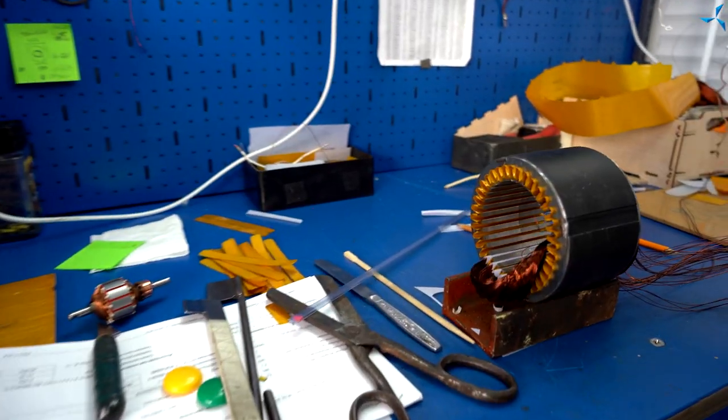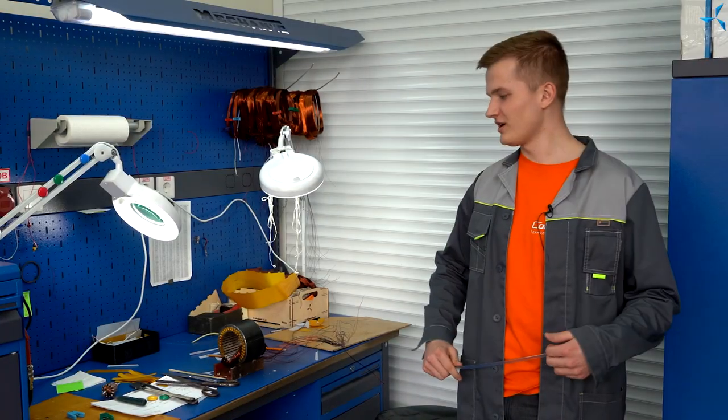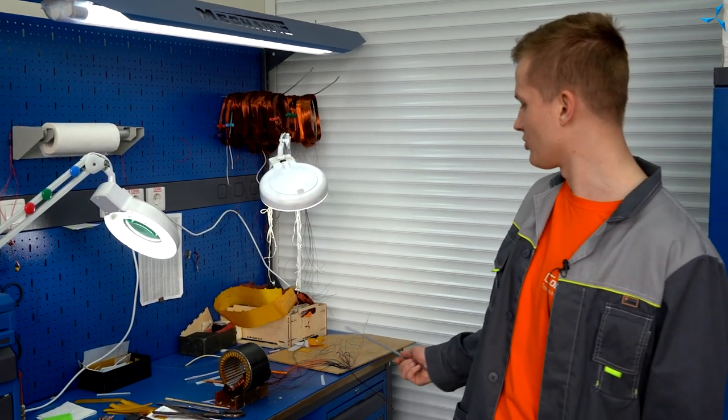Let's move on to the next workstation. At the moment, the stator coils for small-sized electric motors are installed here. And the insulation, the slot insulation box and slot insulation covers are also installed here.